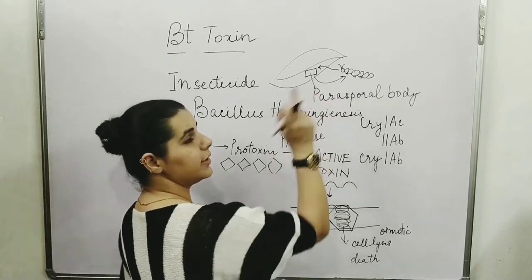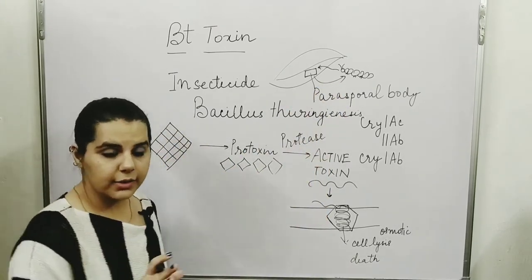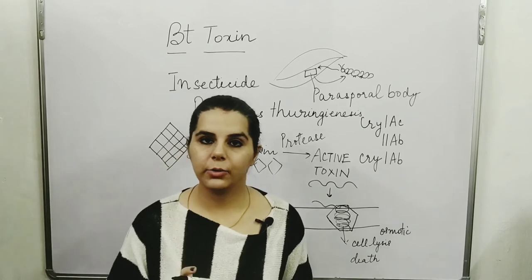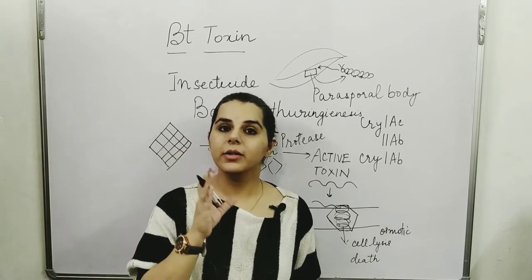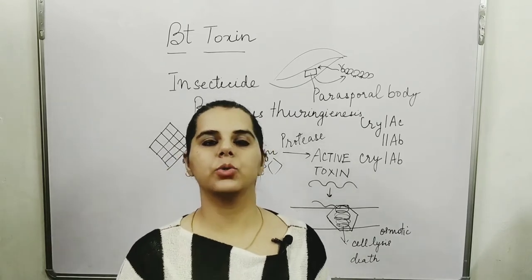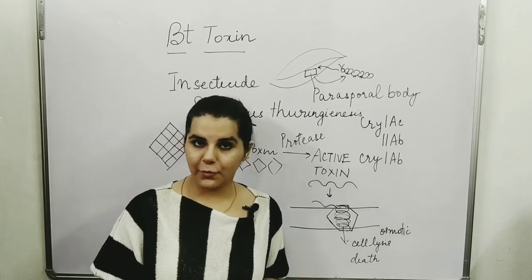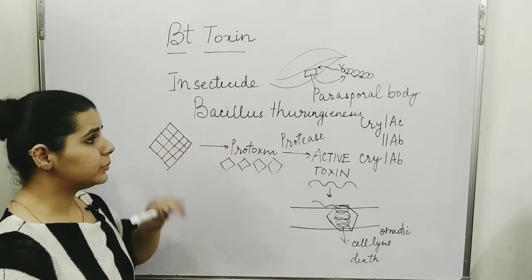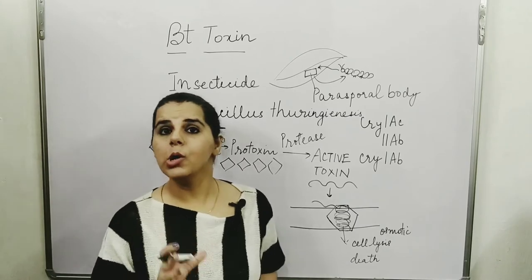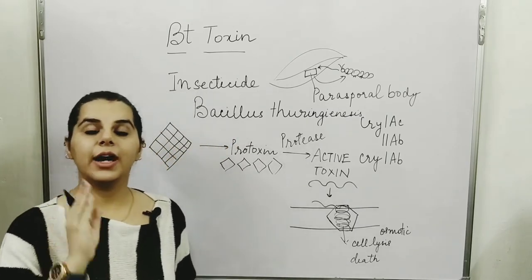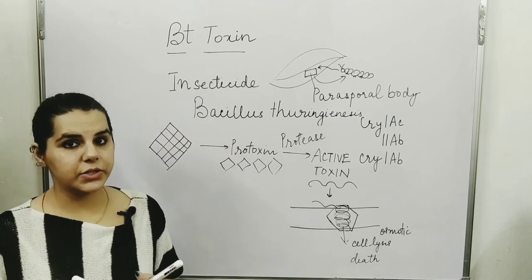So the larva, the insect that damages the crop, will die and the crop will be successfully saved. These insects, corn borer and bollworm, are in the larva and caterpillar stage.